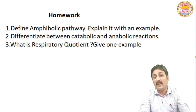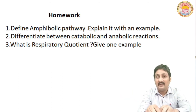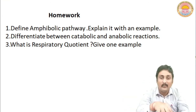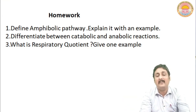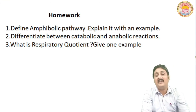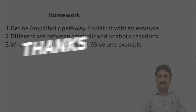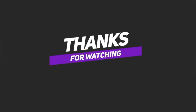When catabolism and anabolism are both happening together — catabolism followed by anabolism, followed by catabolism — it becomes an amphibolic pathway. The last homework question is about respiratory quotient, which we have already covered. Thank you very much and have a nice day.